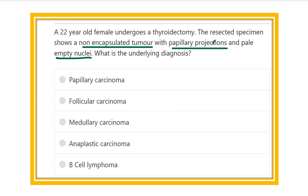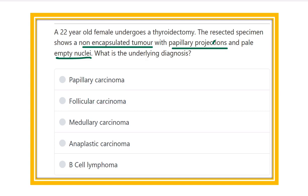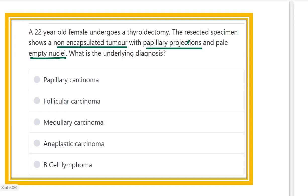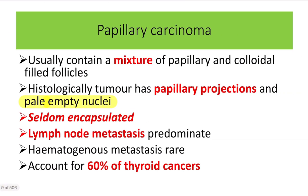The options are: papillary carcinoma, follicular carcinoma, medullary carcinoma, anaplastic carcinoma, and B-cell lymphoma. All of these are carcinomas of the thyroid gland. We have to find out which characteristics are compatible with the given clinical features.